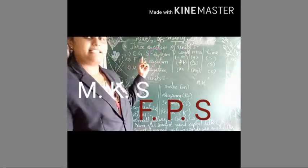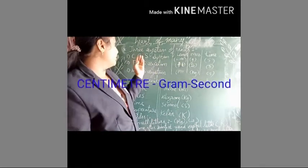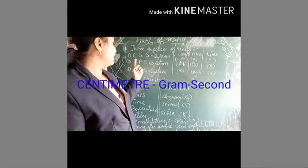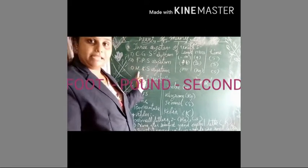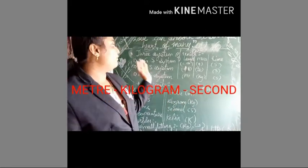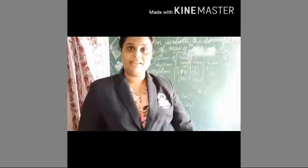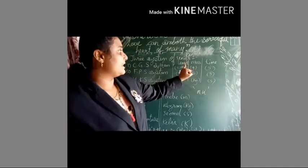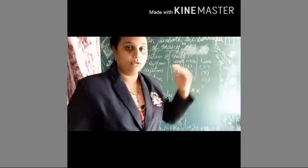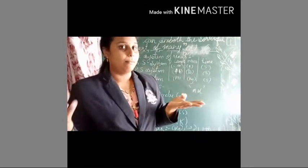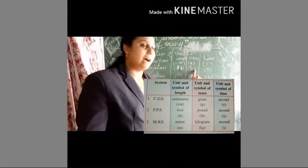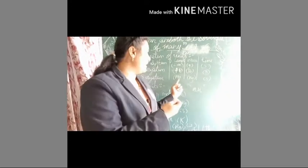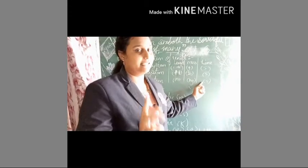CGS stands for centimeter, gram, second. FPS stands for foot, pound, second. MKS stands for meter, kilogram, second. These three systems all deal with the quantities of length, mass, and time, with their respective symbols.